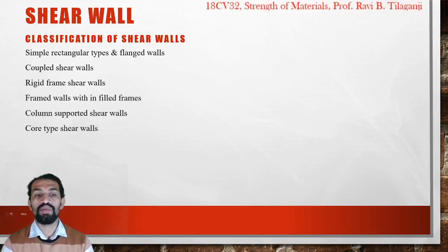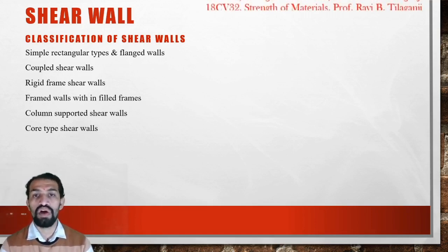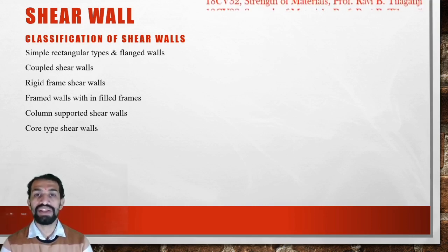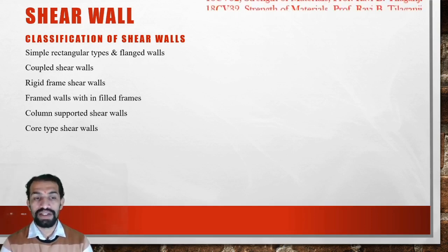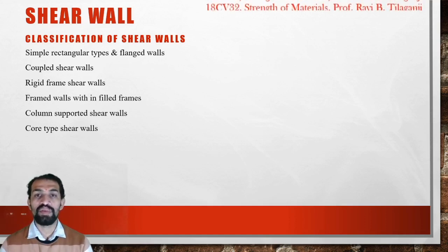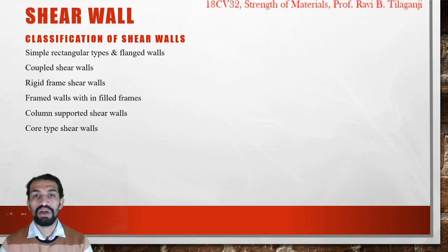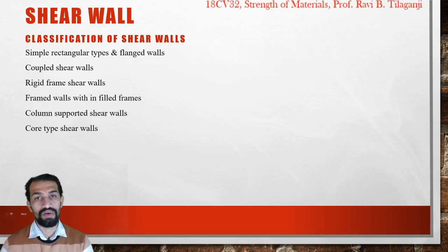Column supported shear walls have supports provided by columns, not by the shear walls themselves. In shear walls, the foundation support is taken entirely by the shear walls itself. Core type shear walls are similar to lift chambers — whatever lift openings are provided, that lift box or lift passage is known as the core type of shear wall.